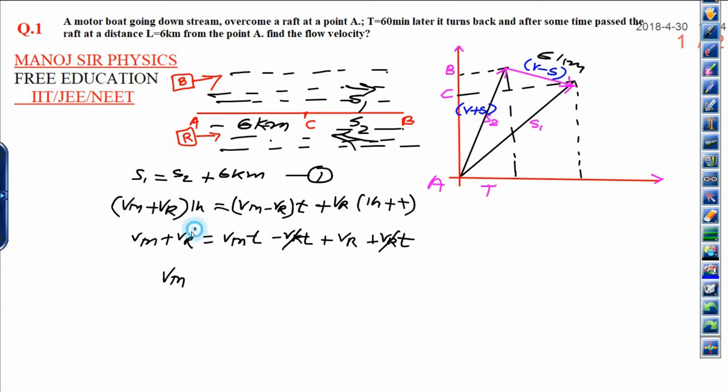Now Vm equals Vr. Vr will cancel and Vm equals Vr. Now you can calculate the time: Vm upon Vr cancels out, that will be 1. Time you are getting 1 hour.